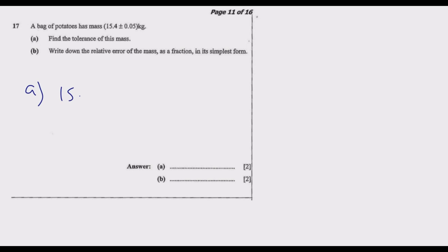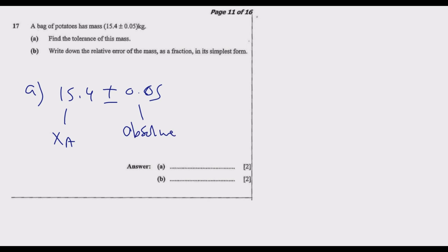For question a, we've been given 15.4 plus or minus 0.05. The 15.4 is the actual value — the true value of the mass of this bag of potatoes. The 0.05 is the absolute error, because we are adding or subtracting a positive 0.05.